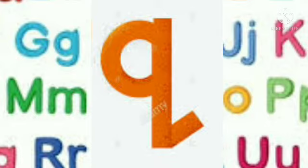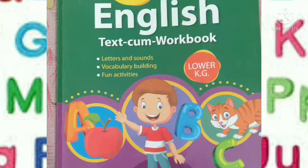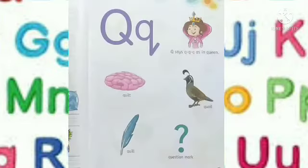Q sounds quack, quack — queen. Quack, quack — quilt. Now children, take your English workbook and take page number 57. We will see how to read this.